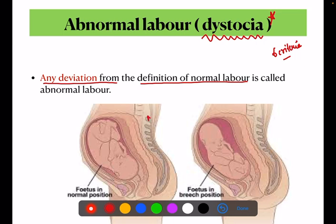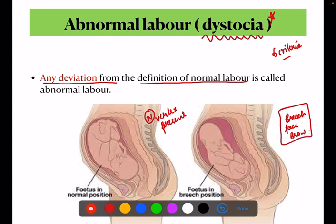For example, normally vertex presentation should be there. But if instead of vertex presentation, it becomes breech, or face, or brow presentation — all of these will come under abnormal labor. Similarly, if it is preterm, that is abnormal. If any aids were used, or a complication arises for the mother or baby, that will all be included in abnormal labor.